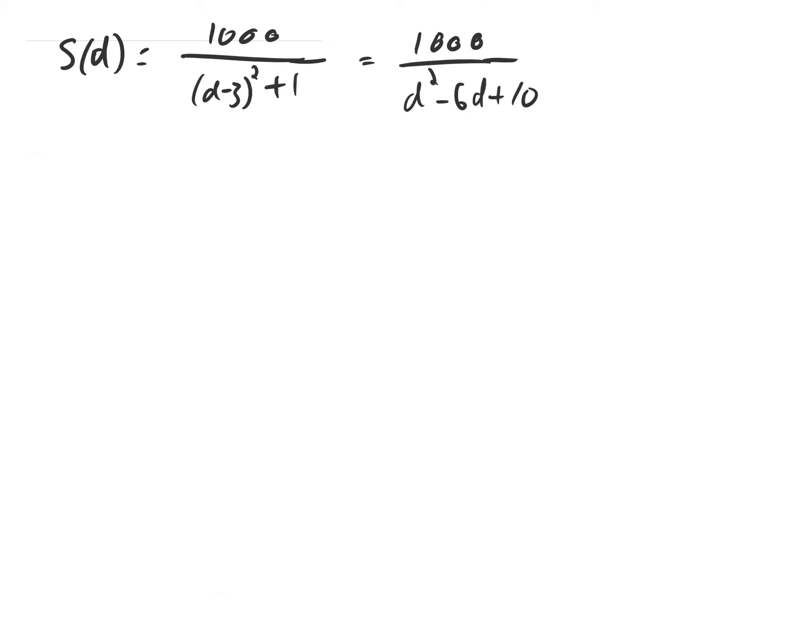It's a little easier if we do a little algebra first. So I foiled out the D minus 3 squared in the denominator and simplified. Now let's find this derivative using the quotient rule. First, I'll just write down what the quotient rule tells me.